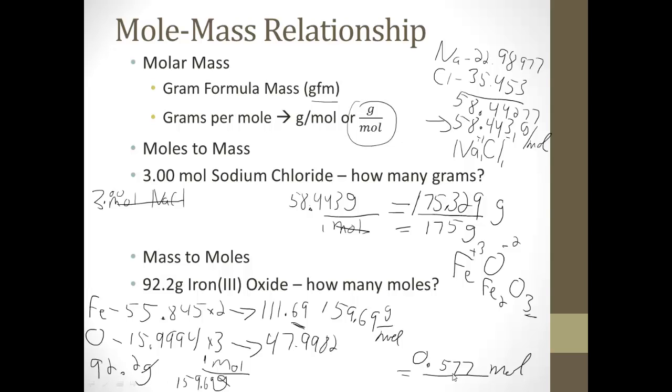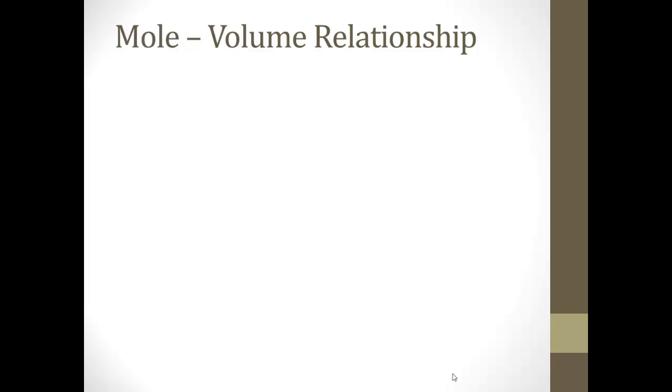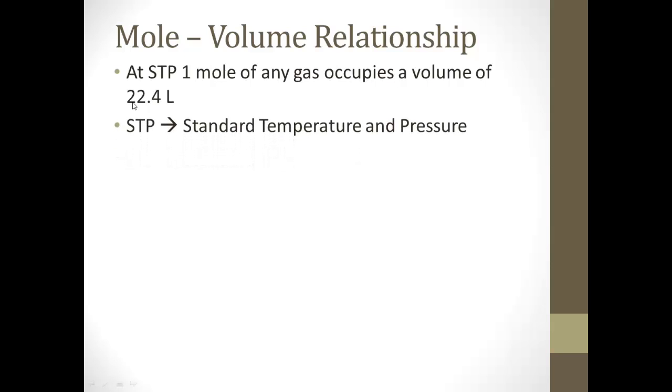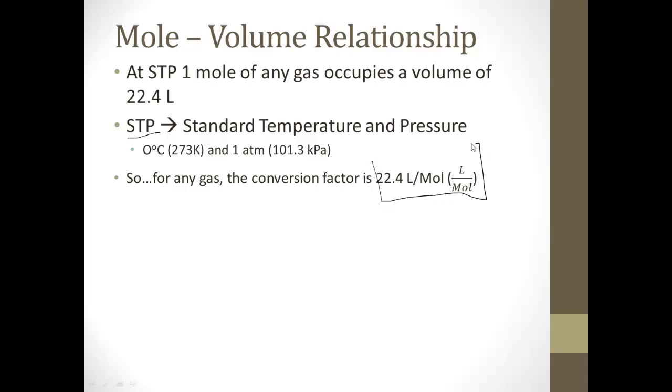Okay, next, the mole volume relationship. At STP, and STP is standard temperature pressure, one mole of any gas, no matter what kind of gas it is, occupies a volume of 22.4 liters. All right, so STP, standard temperature pressure, just means that it's at zero degrees Celsius, which is 273 kelvins, and one atmosphere. That's standard temperature and pressure. But if we're not doing that, pretty much all the problems are going to be at STP. All right, so for any gas, our conversion factor is going to be 22.4 liters per mole. You need to add this to your list of things to memorize.